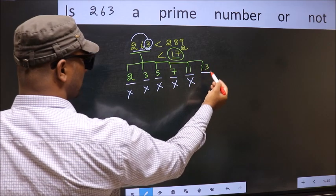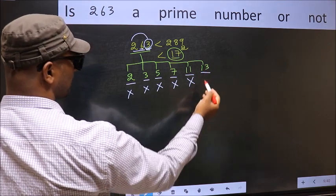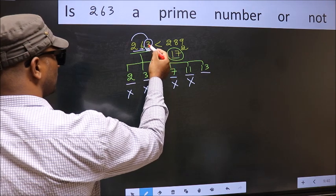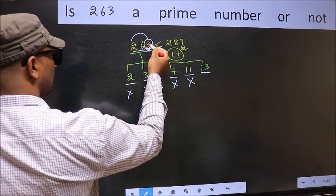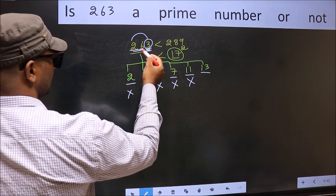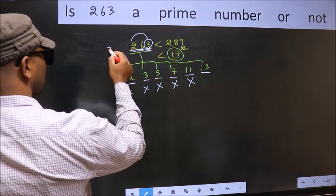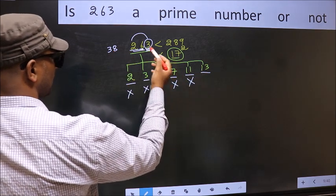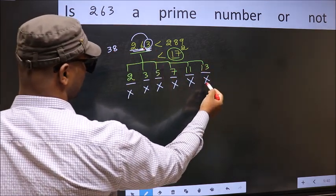Next, prime number 13. To check divisibility by 13, for that, to the last digit you multiply by 4. So, 3 into 4 is 12. Add to this number 26: 26 plus 12 is 38. 38 is not divisible by 13. So, this number also not divisible by 13.